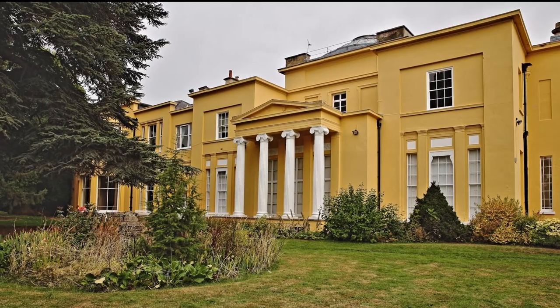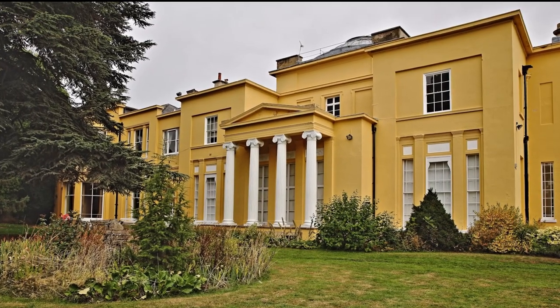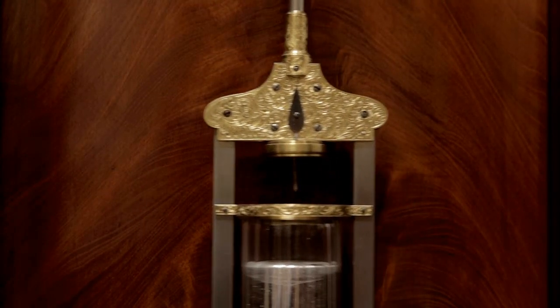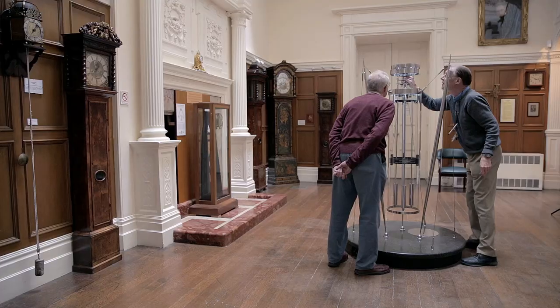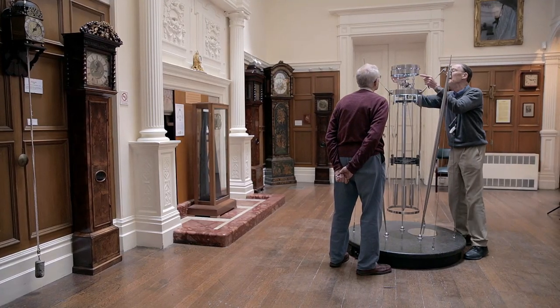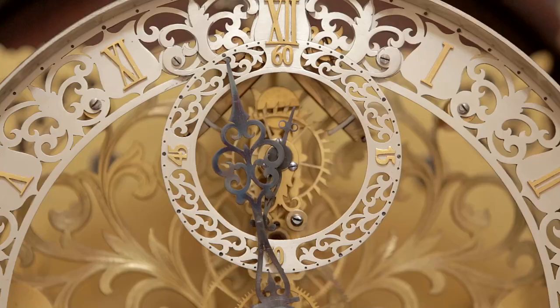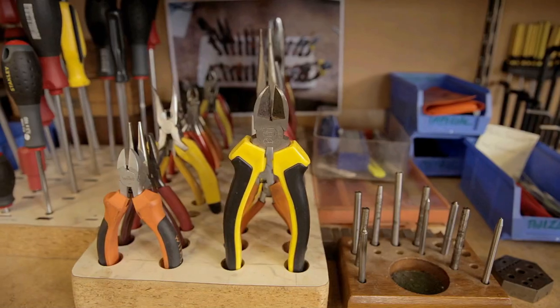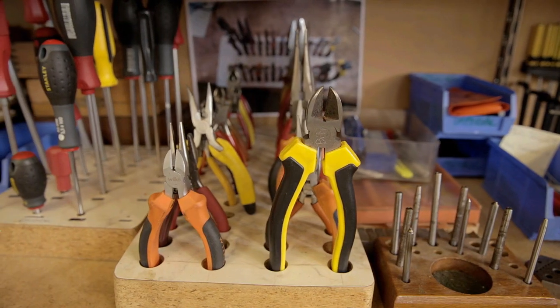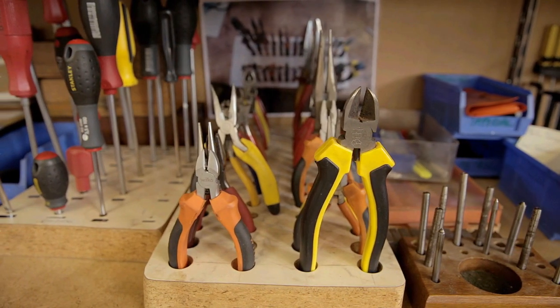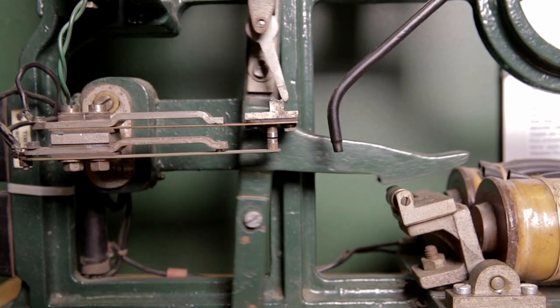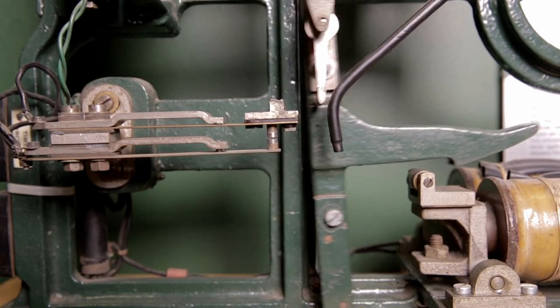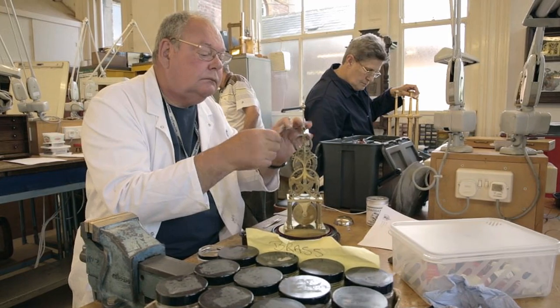The BHI, or British Horological Institute, is an organization that's been in existence for 160 years, and its aims are for the promotion and preservation of the craft and skills of horology. And that means it's an educational organization dedicated to training clock and watchmakers, not only in the United Kingdom, but from all over the world.